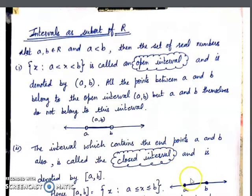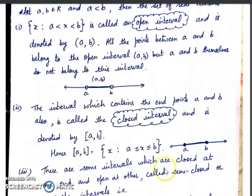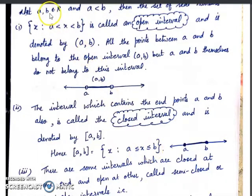See the difference: for the open interval we put an open circle, but for the closed interval we put a dark (filled) circle. In the open interval, endpoints are excluded; in the closed interval, endpoints are included. In roster form, we write the closed interval [A, B] as: X such that A ≤ X ≤ B, where A and B are real numbers.